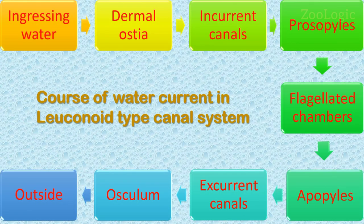This flowchart demonstrates the course of water currents in the leucon-type canal system. Ingressing water enters from the dermal ostia into the incurrent canals; passing through prosopyles, it enters the flagellated chambers. From the flagellated chambers, the water enters the excurrent canals through apopyles, and from the excurrent canals the water is led to the osculum into the outside environment.